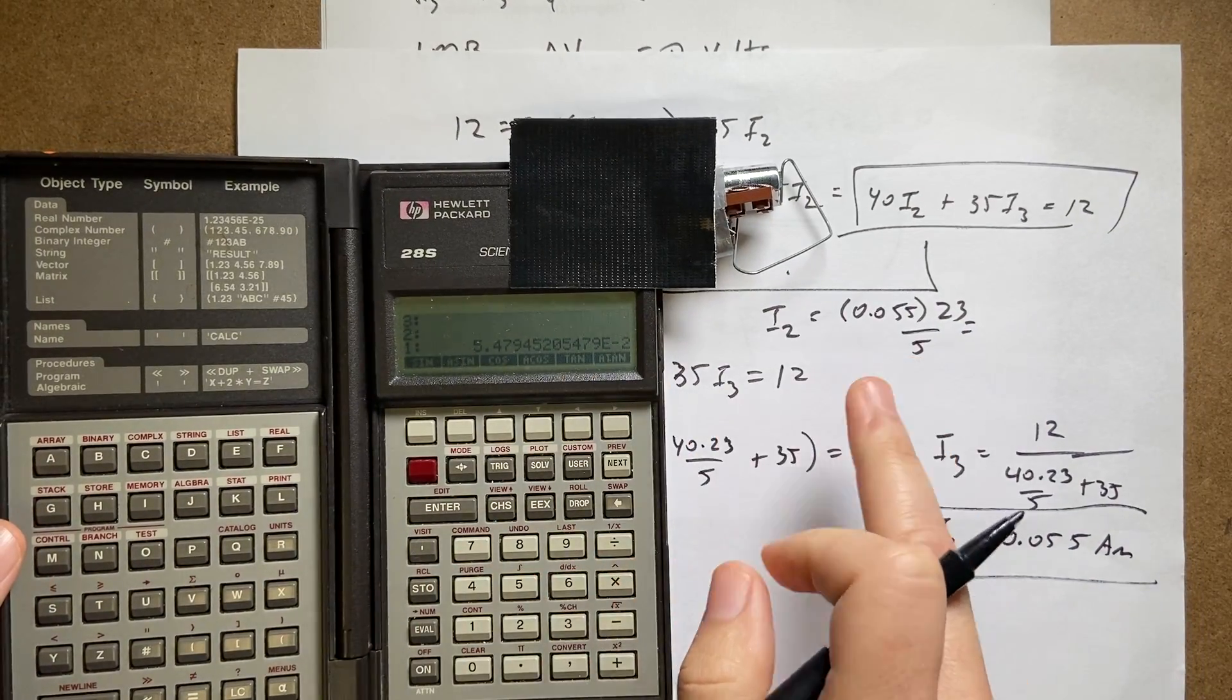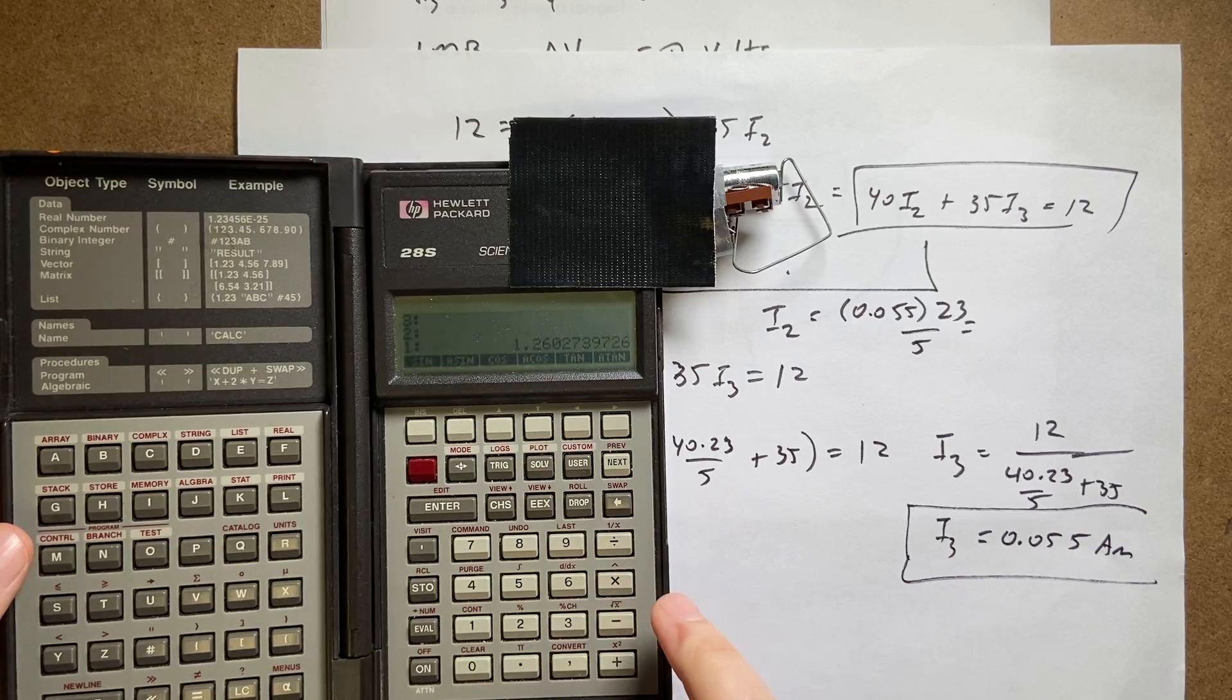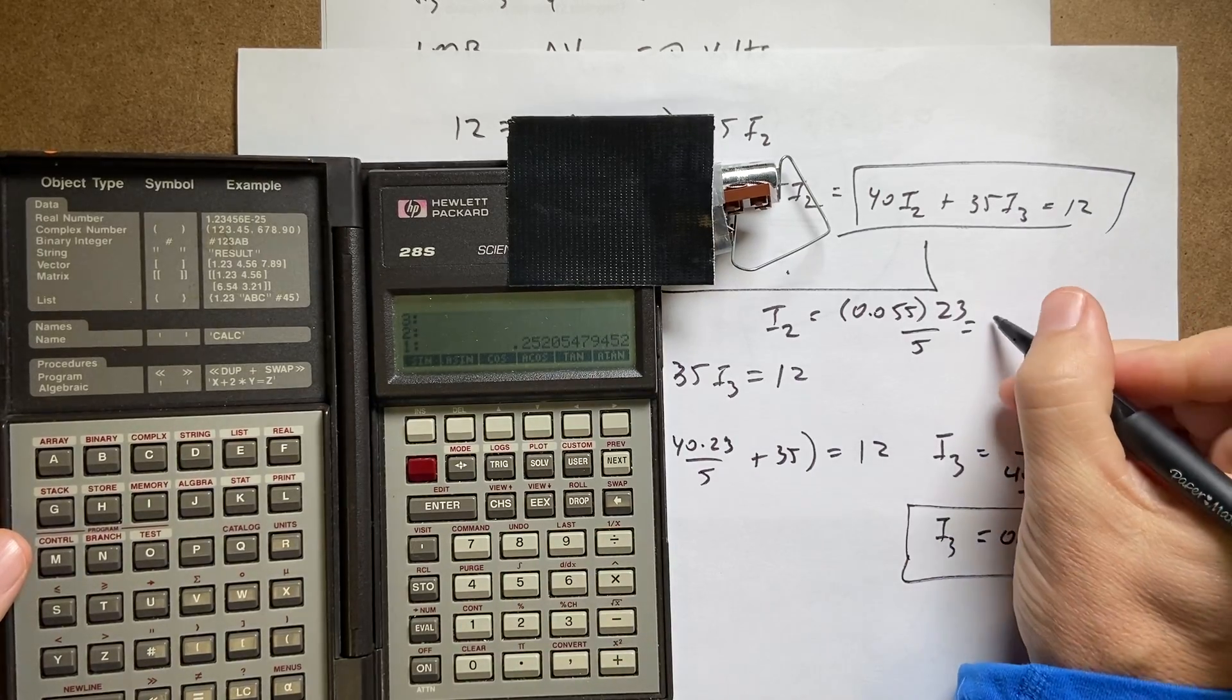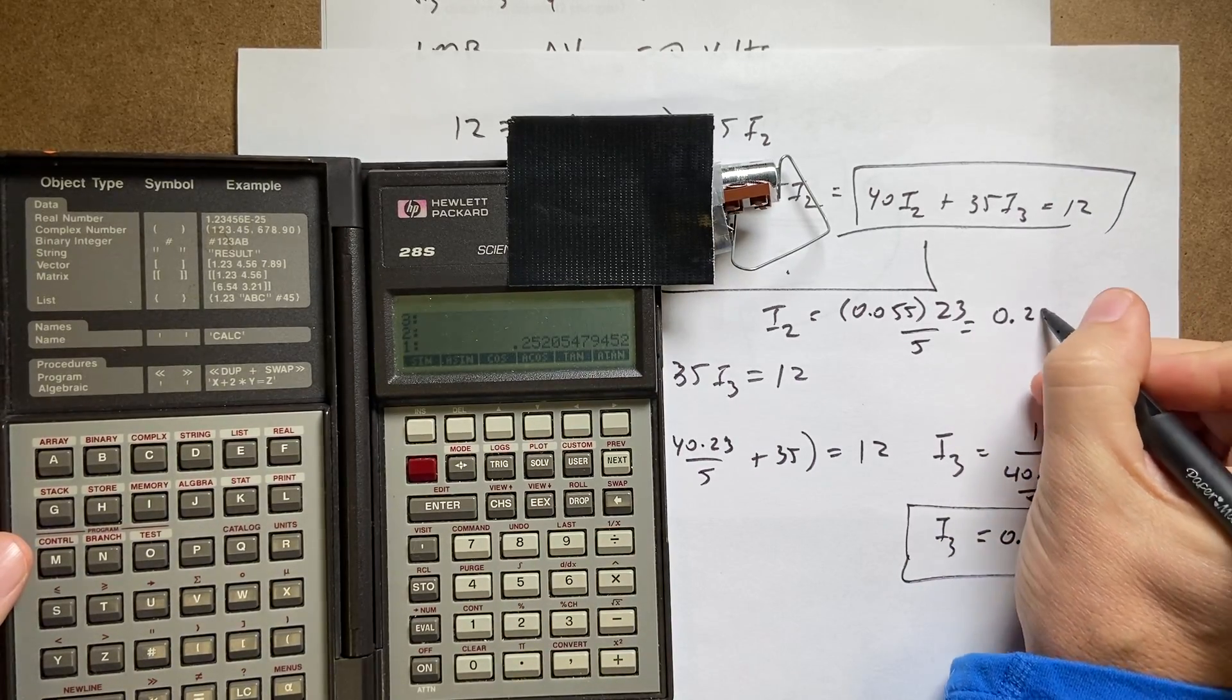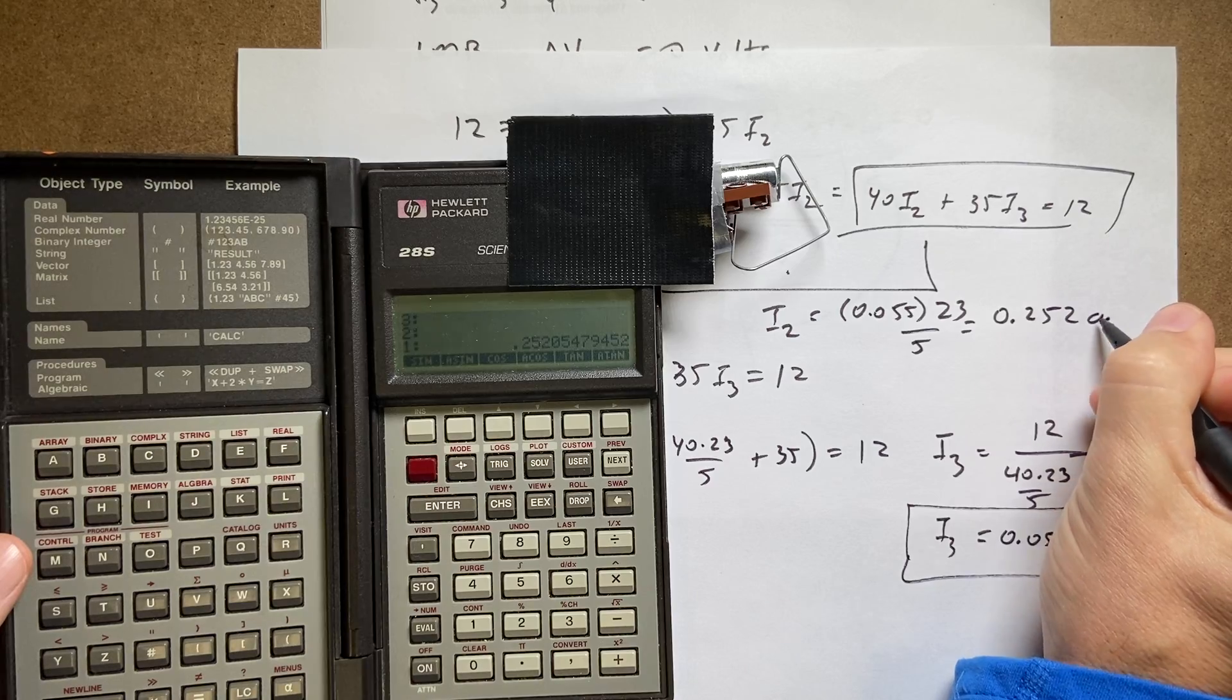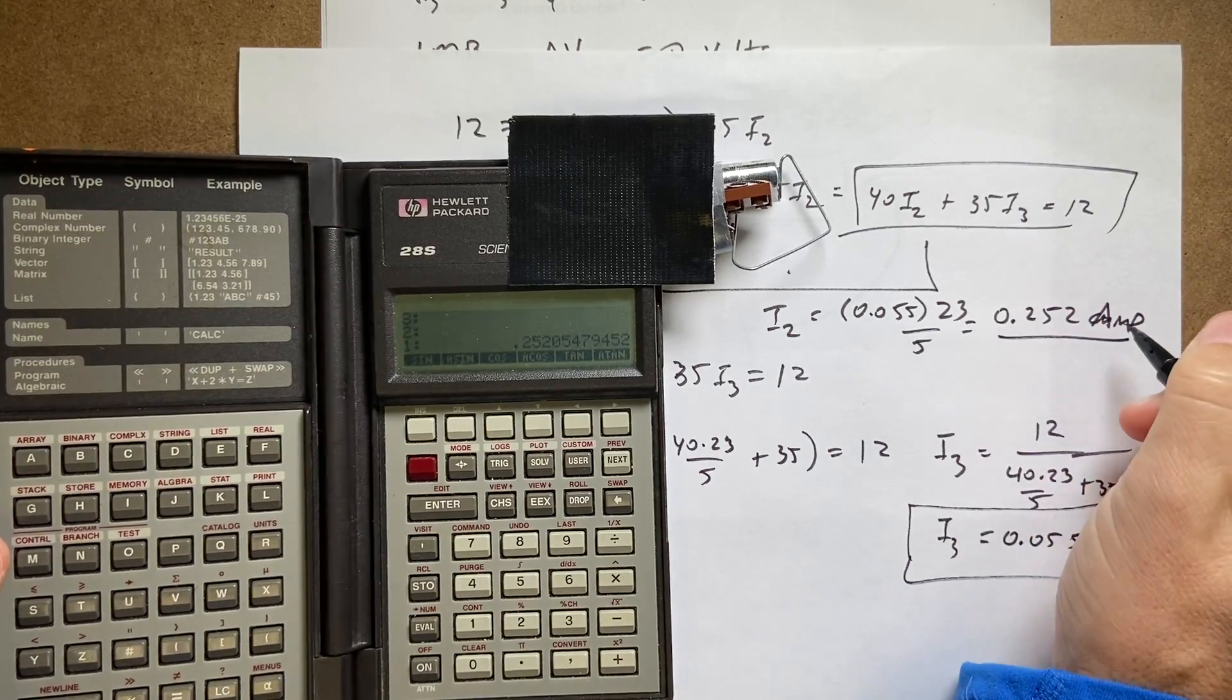So I already have that in there, so i4—23 times 5 divided by—I get 0.252 amps. That's i2.